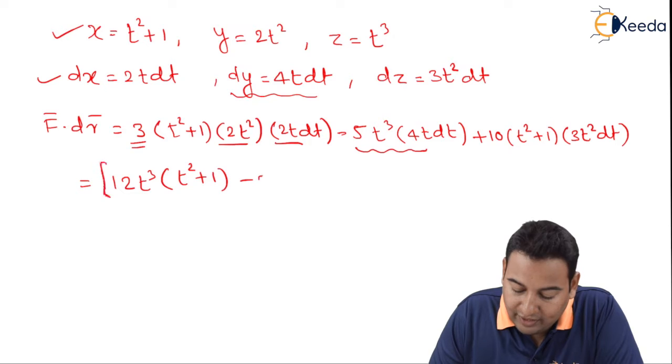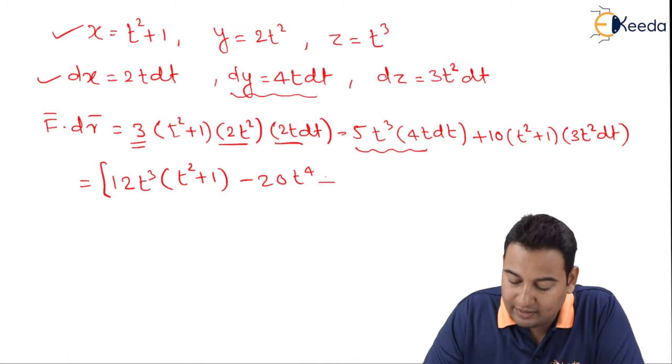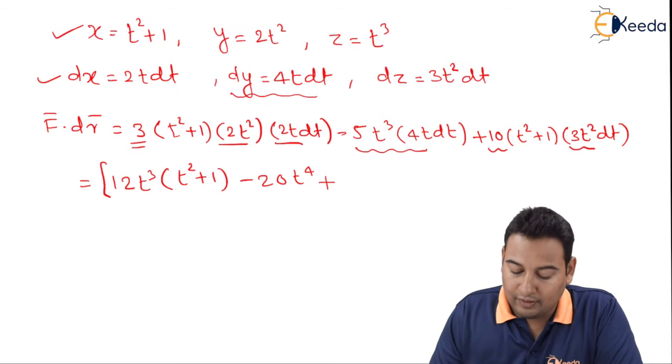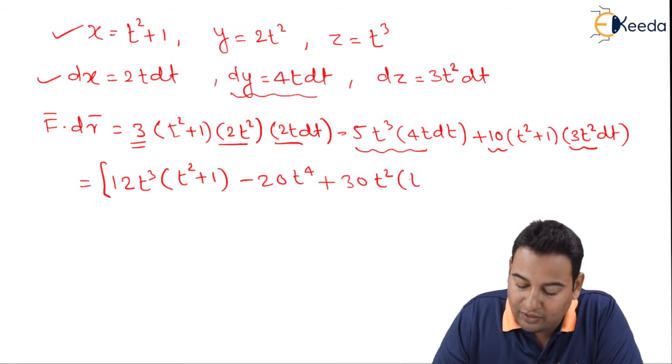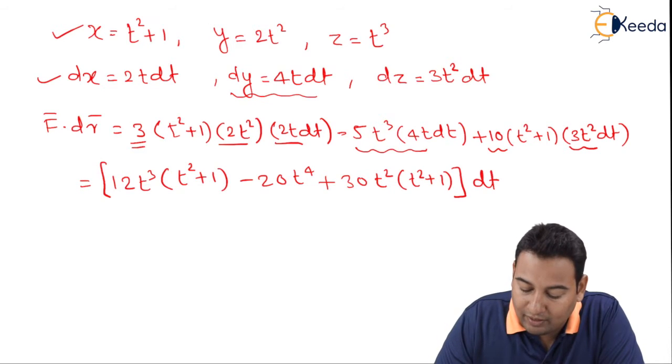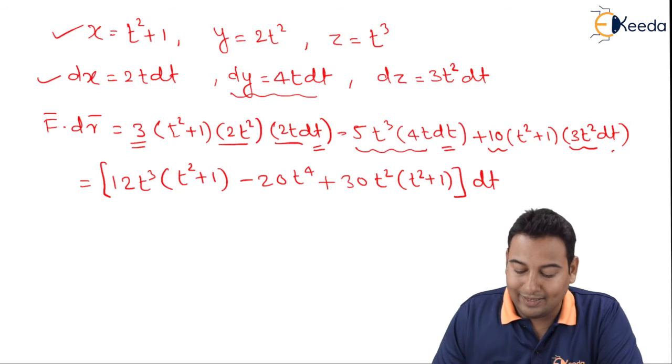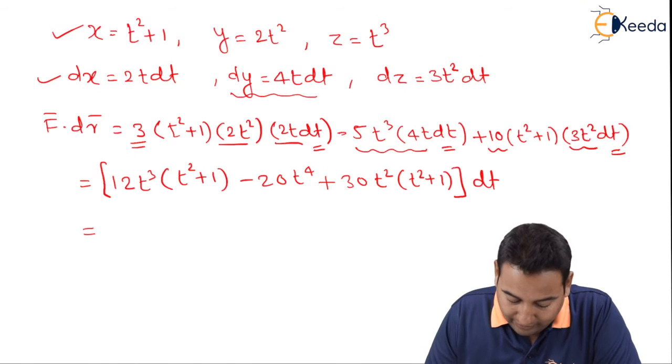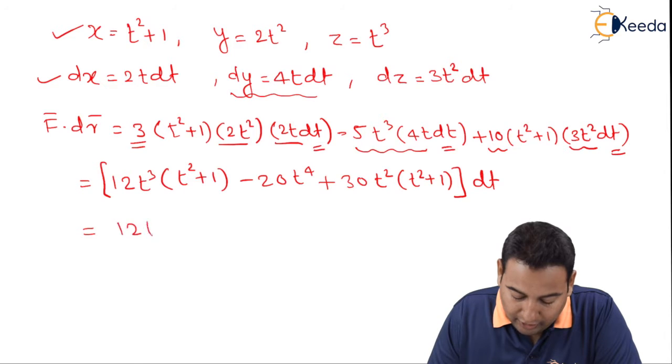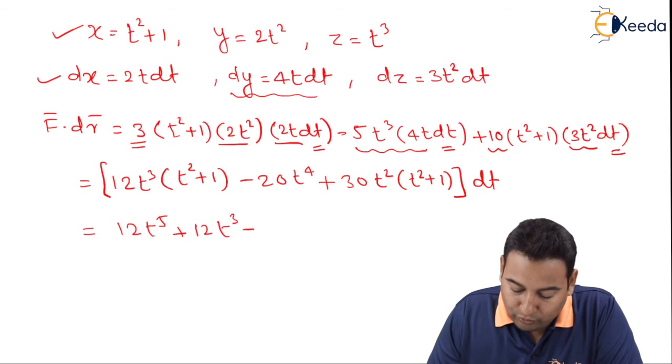This is 20t raised to 4. Plus let's solve this first, that is 30t square and inside you have t square plus 1. Let's close the bracket and dt I'm taking common because it is present in all the terms. If you simplify inside you will get 12t raised to 5 plus 12t cube minus 20t raised to 5.